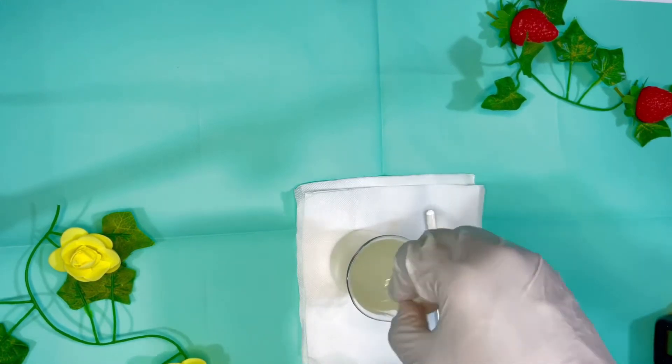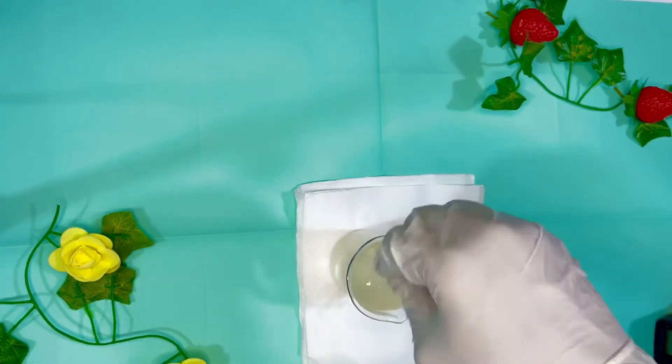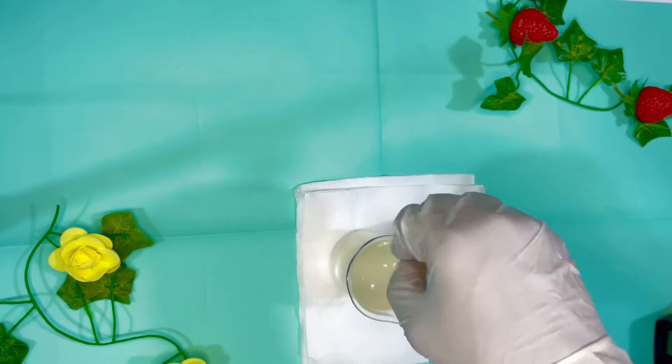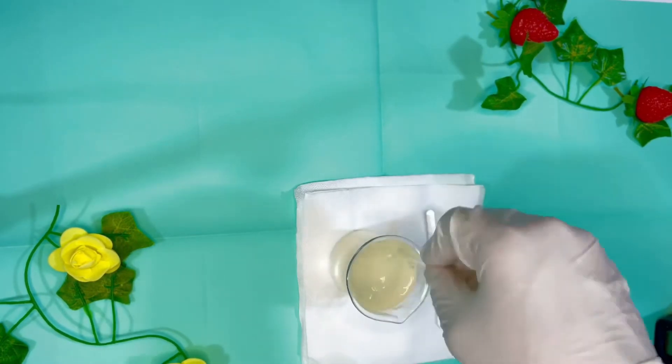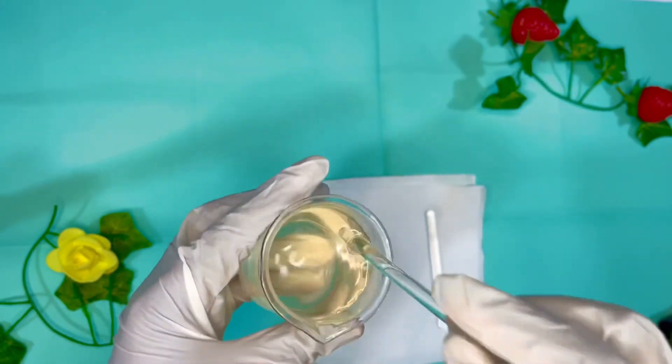And when you add your buffered glycolic acid solution into your Phase B, it's gonna turn cloudy initially, but I promise it will clear off as you are stirring it. It's gonna clear off completely, so there's no problem with that. As you can see now, it's clear.